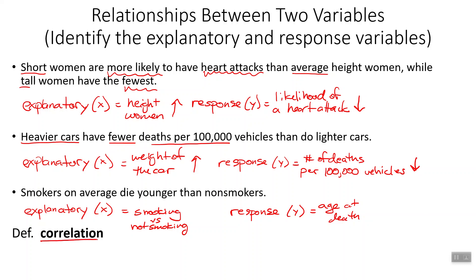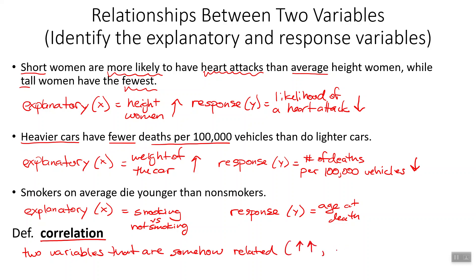All of these are examples of what's called a correlation — two variables that are somehow related. If one goes up, the other goes up; or if one goes up, the other goes down. It does not mean they're causing each other — we're not talking about causation here. We're just saying they're somehow related to each other.